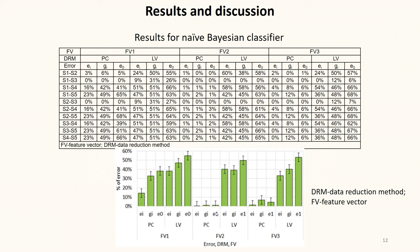The results of classification with a naive Bayesian classifier show that the lowest error values are obtained by reducing the data volume of the feature vectors FV2 and FV3 with principal components. In other cases, the errors significantly exceed 10%. For the following analyses, feature vector FV2 reduced by the principal components method was chosen, because the use of these data resulted in errors of less than 5% for all cases of textile fiber classification.